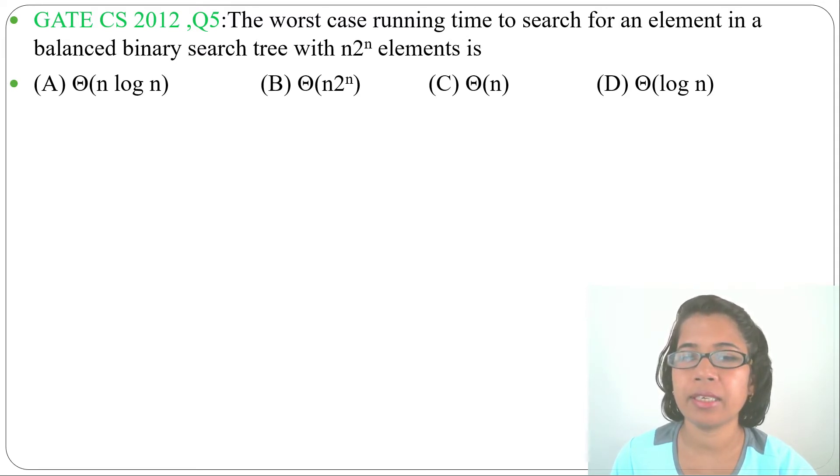The worst case running time to search for an element in a balanced binary search tree with n2^n elements is... and four options are given.